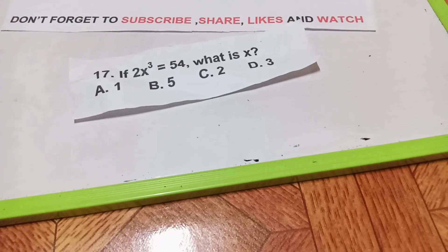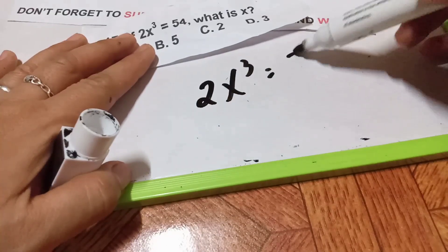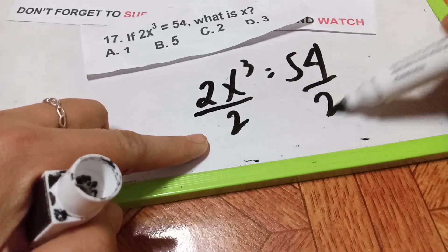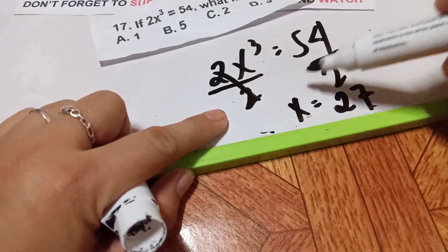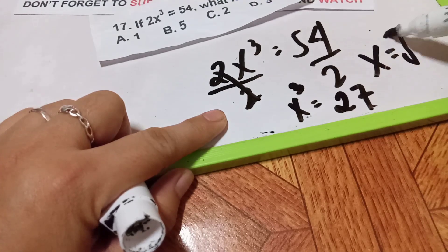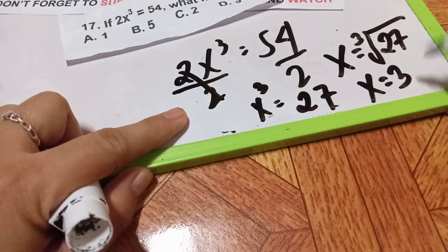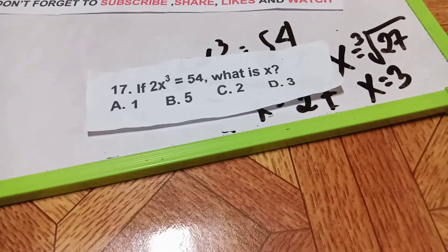Question number 17: If 2x³ equals 54, what is the value of x? Divide both sides by 2, and x³ becomes 27. Taking the cube root, x equals the cube root of 27, which is 3, because 3 times 3 times 3 is 27. The answer is letter D.